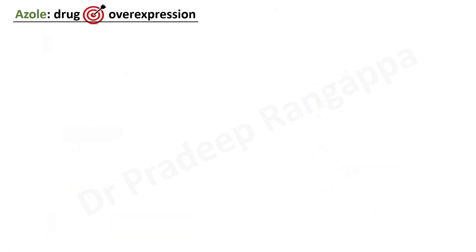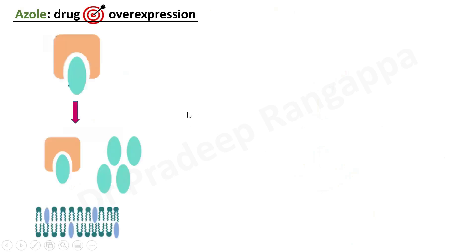There is something called drug target overexpression. Here, the azole is binding to ergosterol, but because there is overexpression of ergosterol — a lot of expression — there is inability of azoles to bind to all these overexpressed ergosterols, and by doing this they develop resistance to the azoles. So basically, it is change in morphology or overexpression of ergosterols — either azoles become ineffective due to morphology changes, or they fail to bind to all the overexpressed ergosterols, leading to resistance.